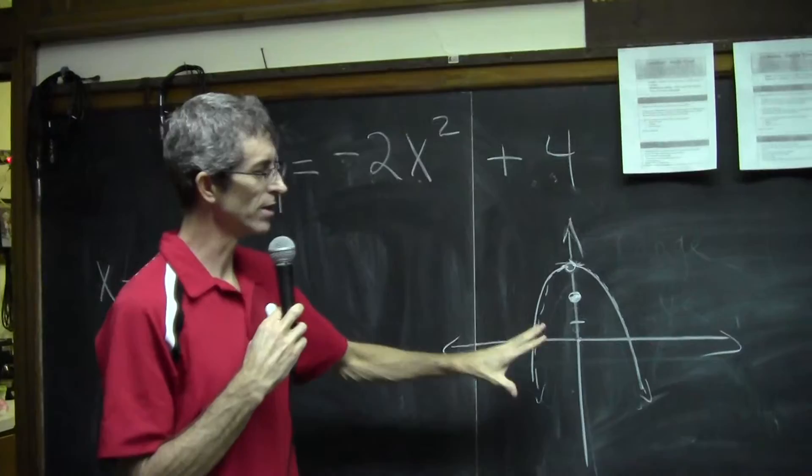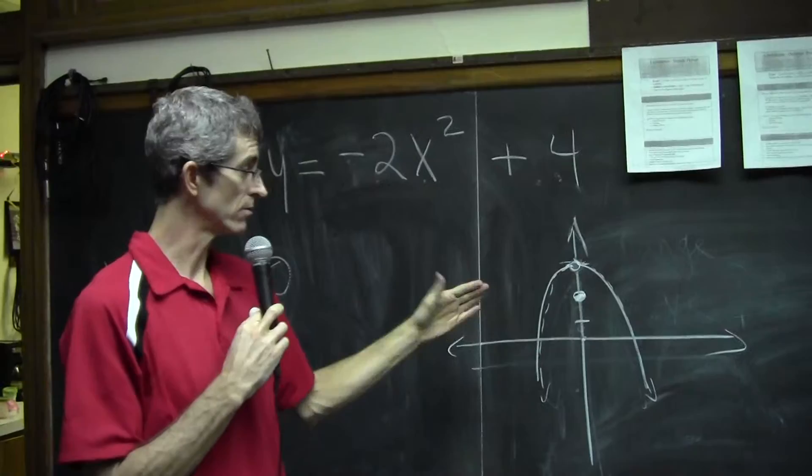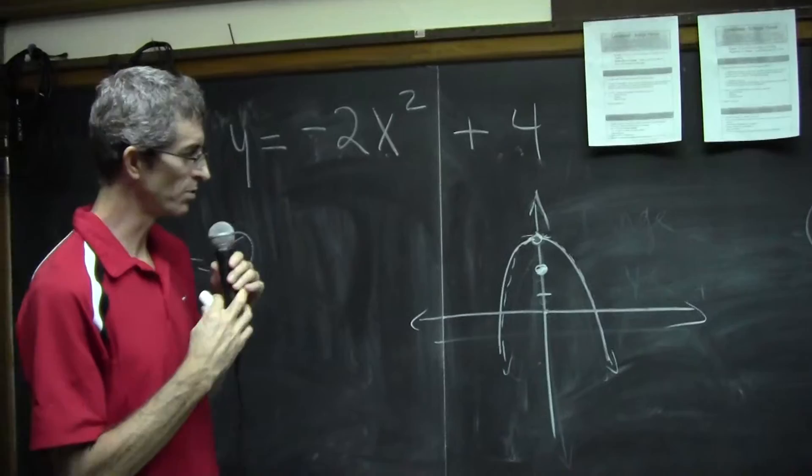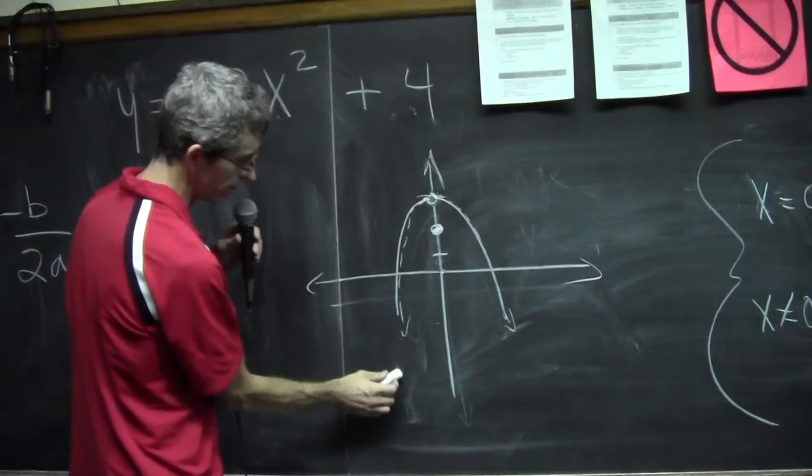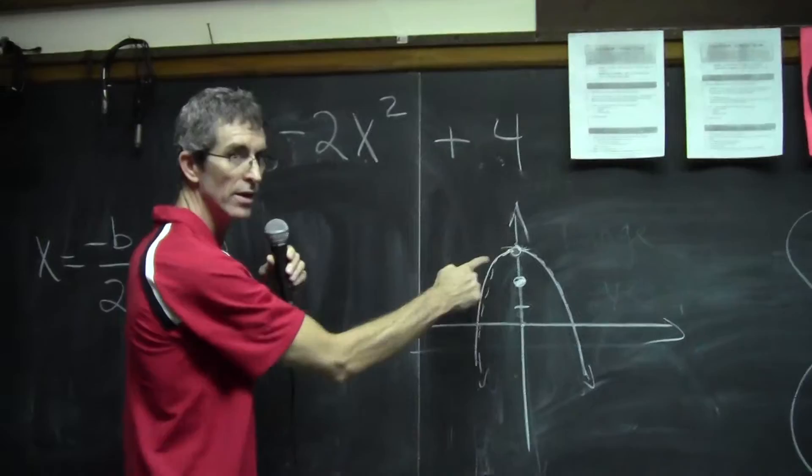The question wants to know, what's the range? In other words, I'm giving you different x values, all sorts of numbers, and the function's spitting out y values. So what's being spit out? If you look at this graph, obviously every single negative number is spit out. Everything below 4 is part of the range.